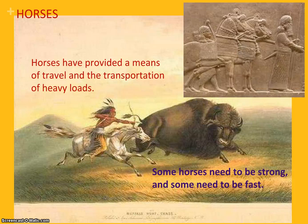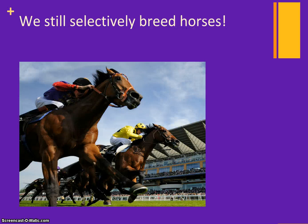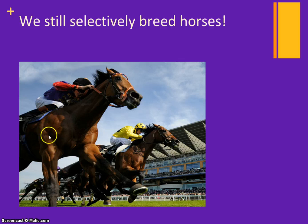The second example is horses. As you probably know, horses have provided a means of travel and transportation of heavy loads. Some horses need to be strong and some need to be fast. How do we get a strong horse versus a very fast horse? We selectively breed horses, and we still do this today — it's a huge money-making industry. This horse is bred because it probably has amazing muscles and a bone structure that lends itself to being super fast, winning races, and making people lots of money.